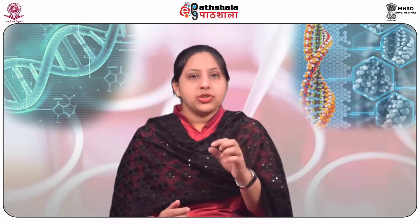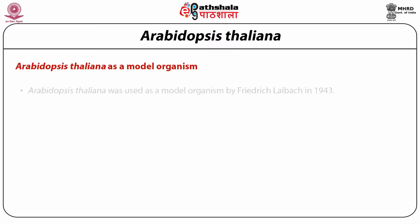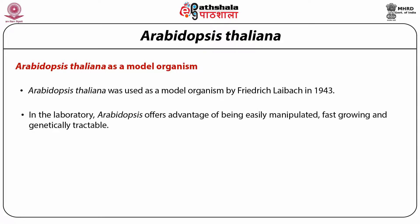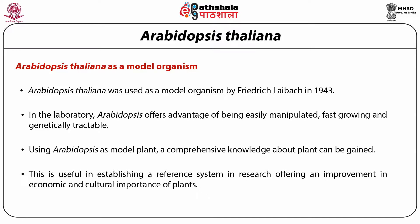Arabidopsis thaliana has a relatively short and fast life cycle of just 50 days from germination to seed maturation. As a photosynthetic organism it requires only light, air, water, and a few minerals to complete its life cycle. Seeds germinate at low temperature of about 5 to 10 degrees Celsius in the presence of light. Arabidopsis thaliana was first used as a model organism by Friedrich Laibach in 1943. In the laboratory it offers the advantage of being easily manipulated, fast-growing, and genetically traceable, providing comprehensive knowledge about plants.